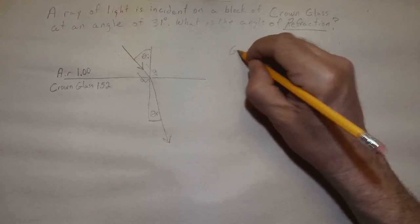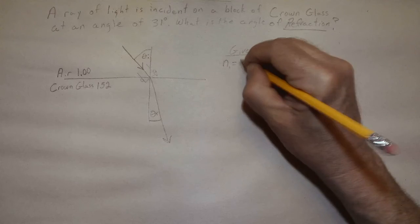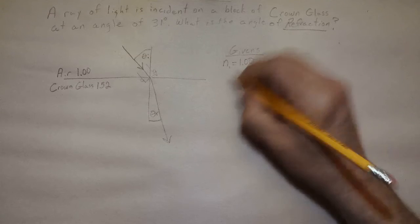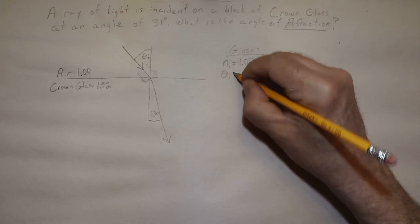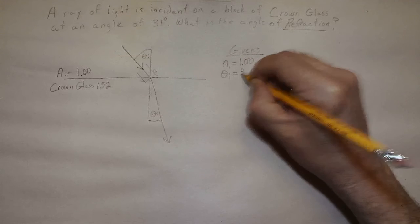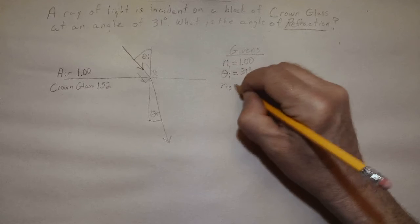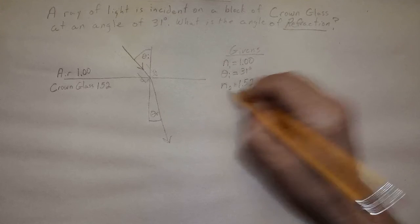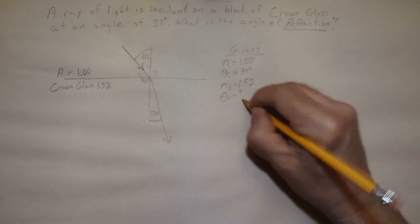Now we can set up our givens and we have N1 sine theta 1 equals 1.00, and theta 1 or theta I equals 31 degrees. We know our N2 is equal to 1.52, and our theta R is the angle that we are seeking.